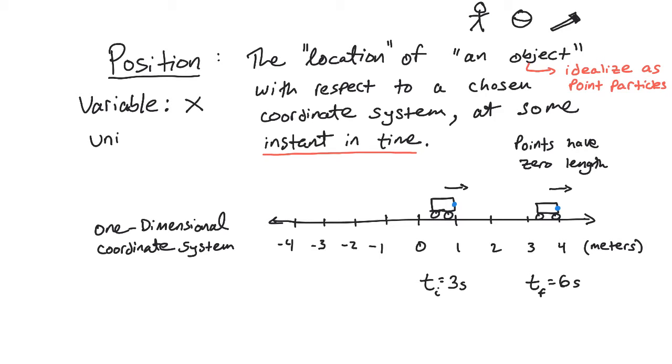So the symbol that will represent position will be x, that's typically done for one dimensional motion. And then the unit is the meter. So meter or just lowercase m for short.